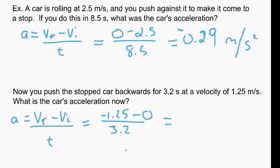And we want 2 sig digs or 3. We want the least, so we want 2. So negative 0.39 meters per second squared.